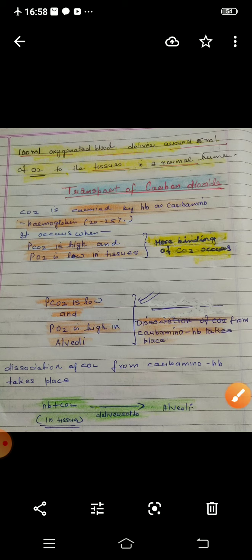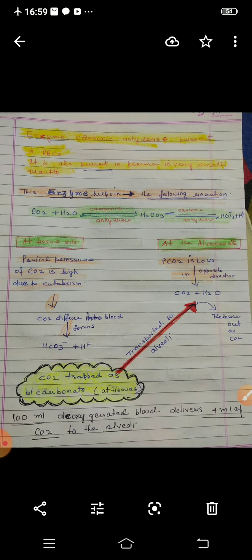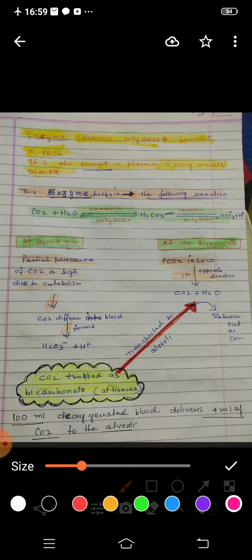There is still more very important content to cover. There is an enzyme called carbonic anhydrase which is very crucial. This enzyme is present in the RBCs, and in a small amount it is also present in the plasma. This enzyme plays a very important role in helping the transport of carbon dioxide.